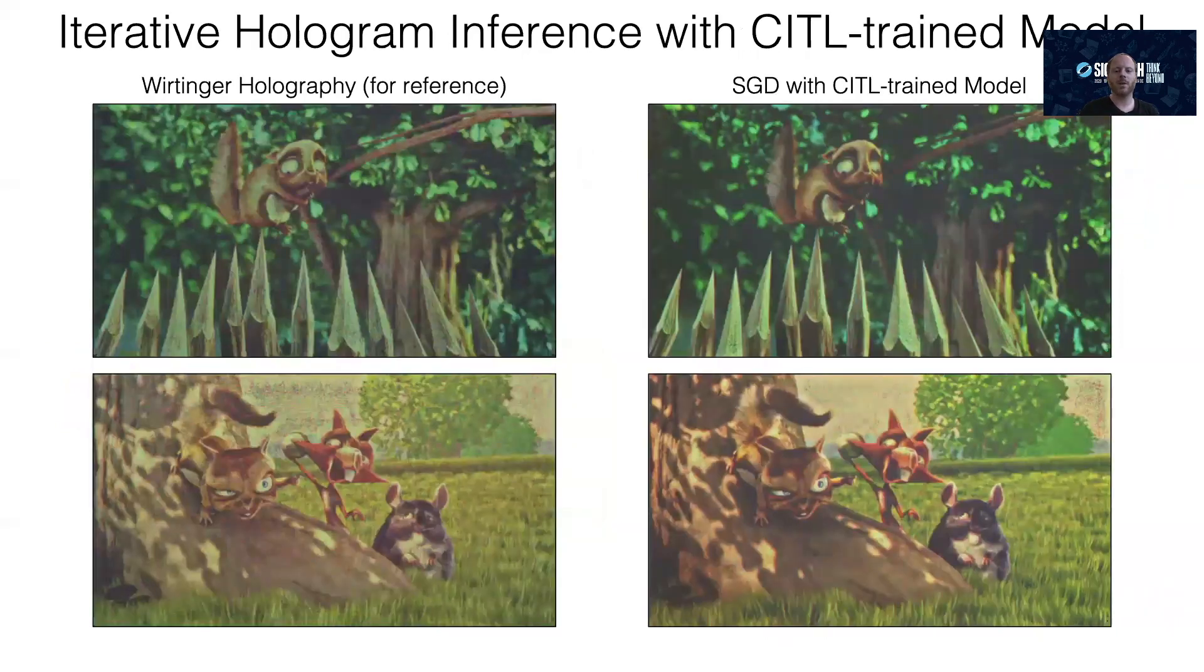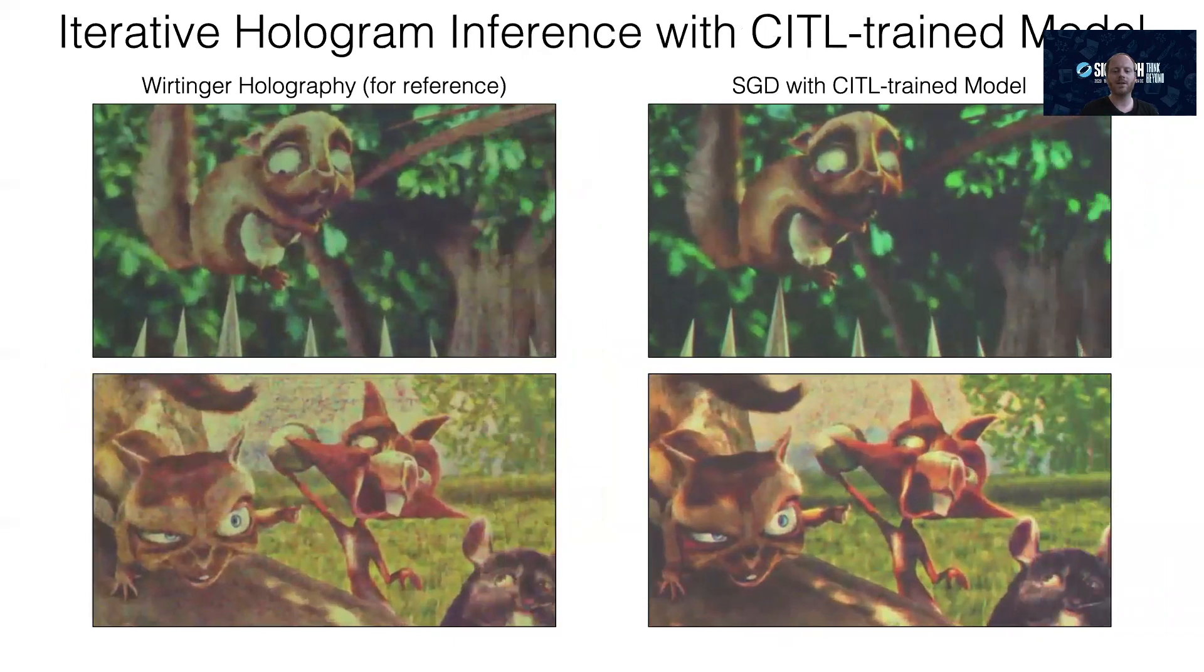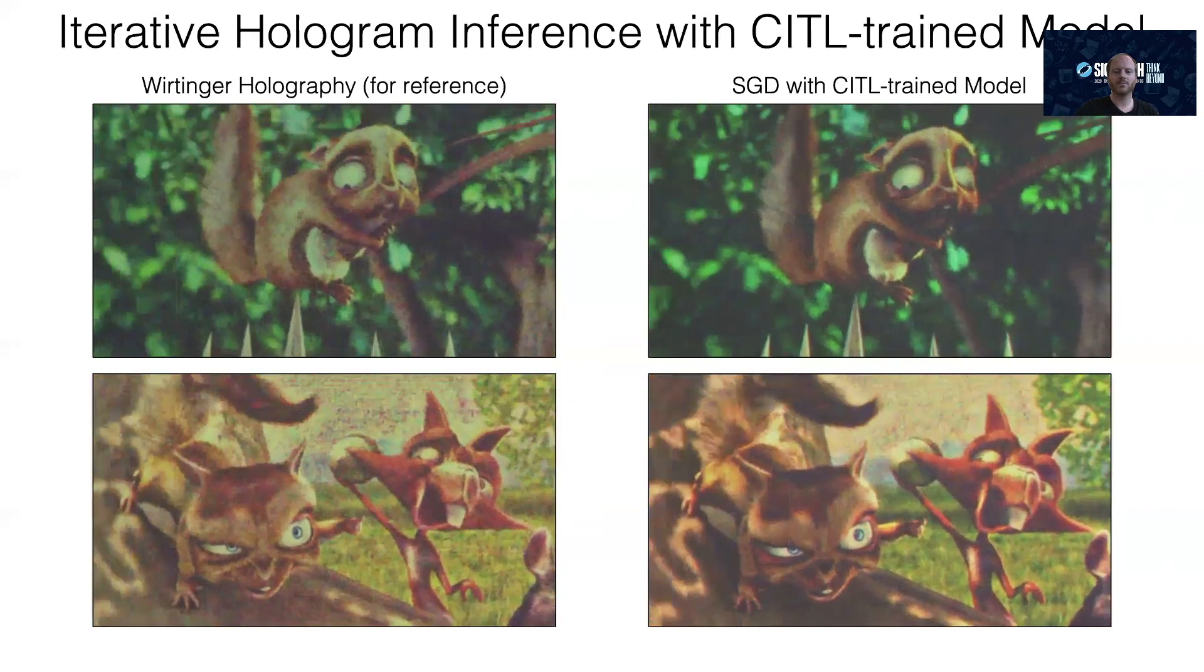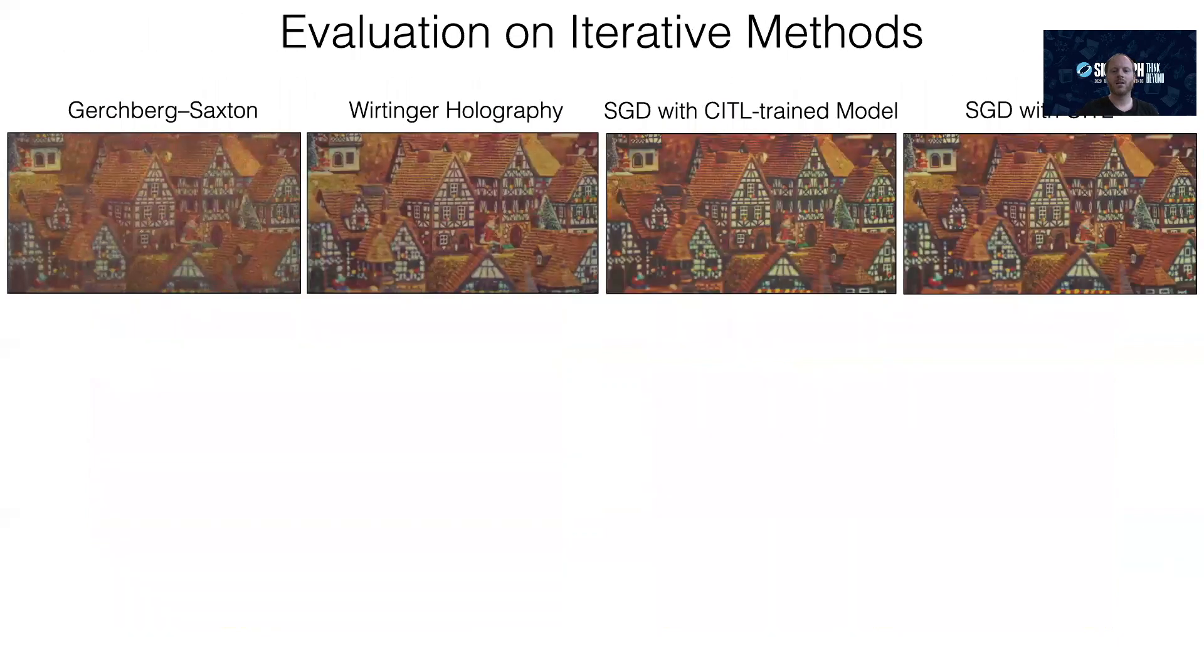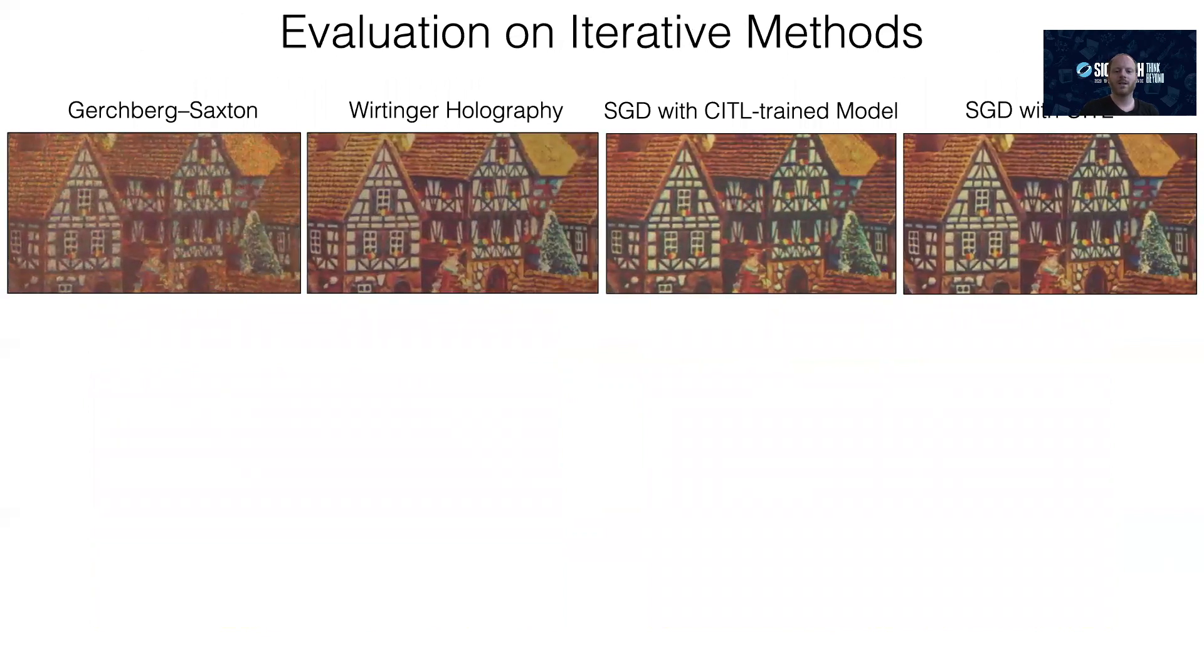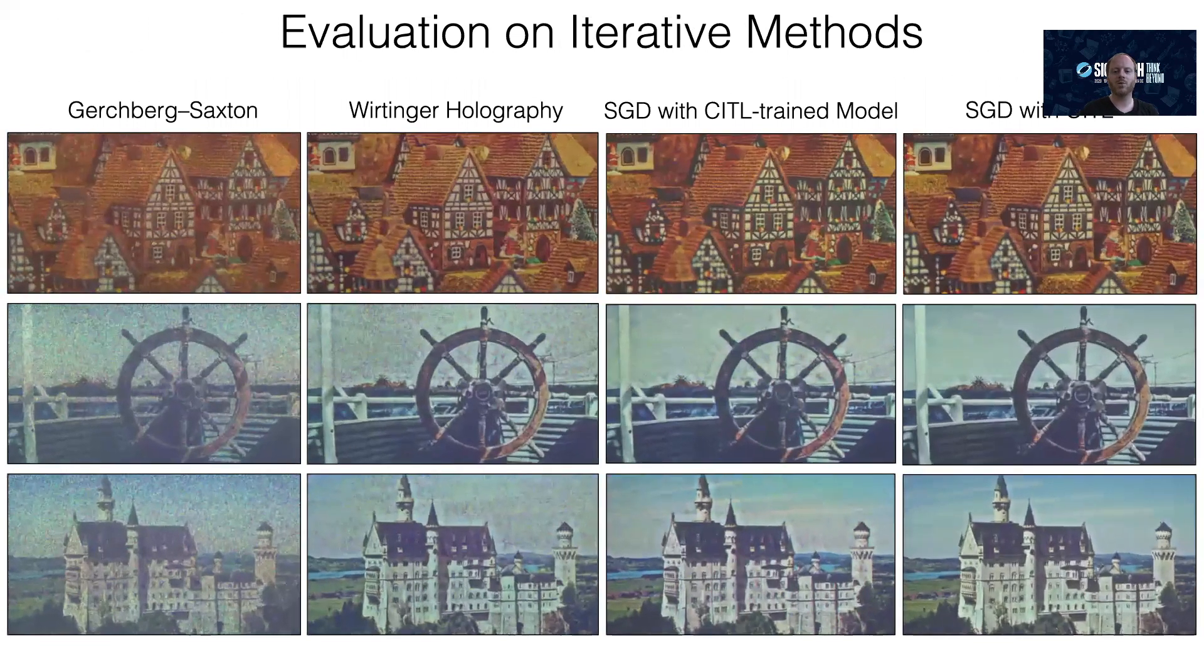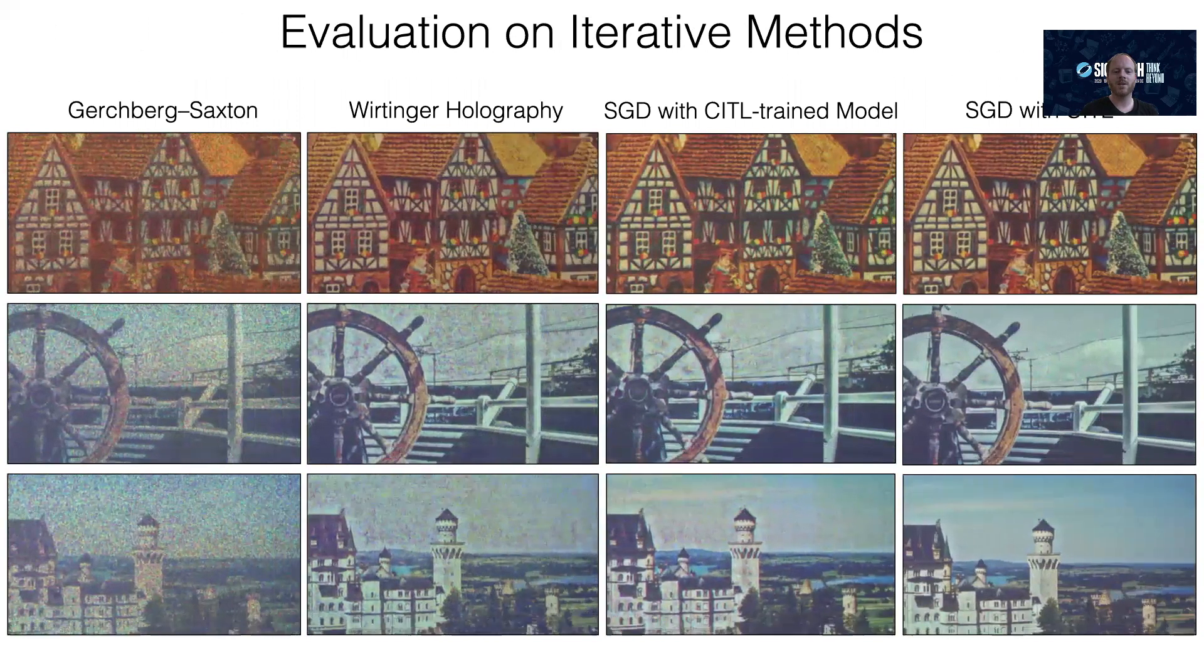Comparing this model-based approach to the best previous CGH method shows that we can significantly outperform it. Here's a comprehensive comparison of a number of iterative CGH algorithms, including our two variants of camera-in-the-loop holography. Both significantly improve over existing methods, with the camera-in-the-loop optimization approach on the right being the very best.